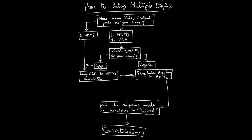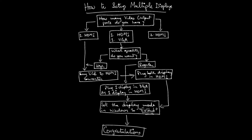You can connect two external displays — one via HDMI and one via VGA. Then go to Windows display mode and set it to Extend. The third option is if you have two HDMI video output ports on your device; then you can connect directly and set the display mode to Extend. That is how you can get multiple outputs from a laptop or a PC. Thanks for watching.